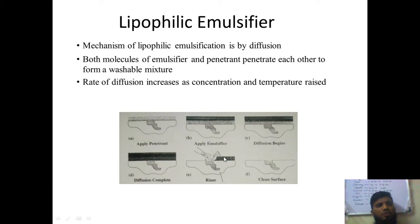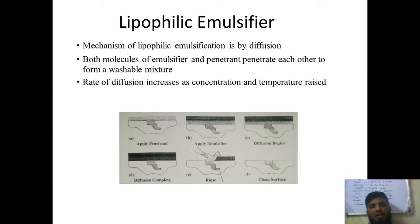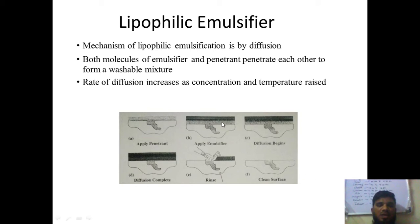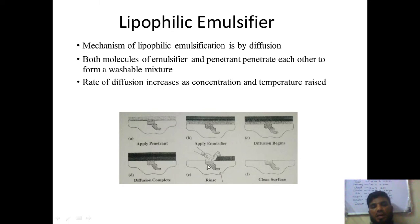An analogy for this diffusion process: like acid used on bathroom tile stains — when you pour acid on the stains, it creates bubbles, and after rubbing, the stains are easily removed. Similarly, the penetrant and emulsifier mix with one another through diffusion. As shown in the diagram, this is the penetrant and this is the emulsifier — they start to diffuse and become completely mixed. Once the emulsifying agent is applied and then placed in a rinsing liquid, it can be easily washed off.